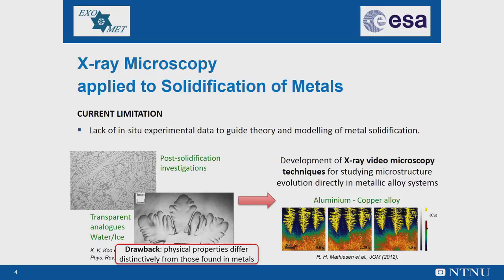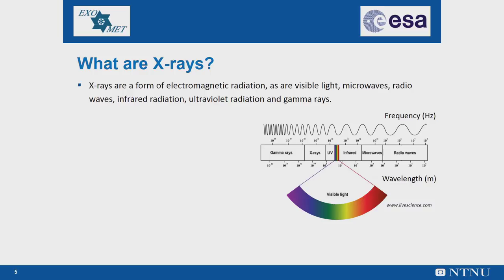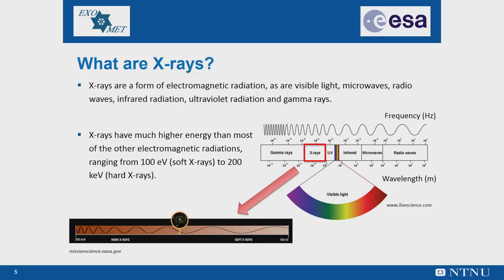What are X-rays? X-rays are a form of electromagnetic radiation, as are visible light, microwaves, radio waves, infrared radiation, ultraviolet radiation and gamma rays. Scientists usually refer to X-rays in terms of their energy rather than their wavelength. X-rays have very small wavelengths between 0.03 and 3 nanometers, so small that some X-rays are no bigger than a single atom of many elements. X-ray energies range from 100 eV for soft X-rays to 200 kV for hard X-rays. Because of their energies, hard X-rays can penetrate deeper into matter than soft X-rays.